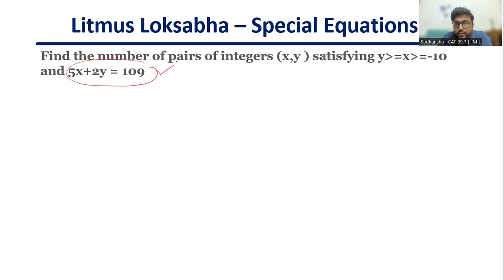5x plus 2y is equal to 109. That is given to us and there is a condition that is given to us. Obviously we are looking at multiple possibilities here. How do we go about solving special equations? A very simple guide. Let's convert this: I can write this as 5x is equal to 109 minus 2y.